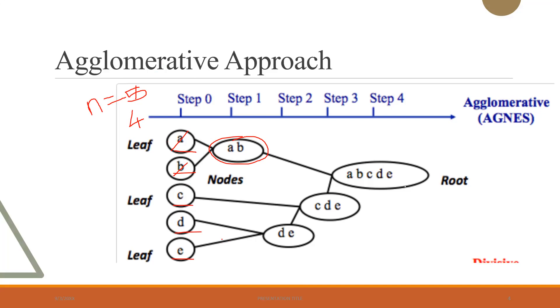In the next step, we merge object D and object E as they are close to each other. So this forms DE as a single cluster. In the next step, we merge C with the cluster DE into a single cluster CDE. In the last step, we are only left with the cluster AB and CDE. So we merge these two clusters to form a single cluster with all the data objects. This is how agglomerative approach works.